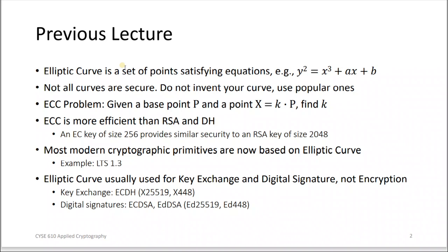The elliptic curve cryptography problem is that we have a given point P which everyone knows and a given point X which is also known, but how can we find k to obtain X? We studied that ECC is better than RSA and Diffie-Hellman in many cases because it provides the same security but with much smaller keys.